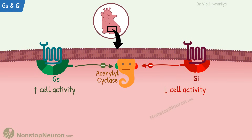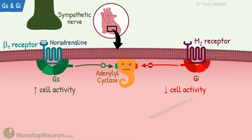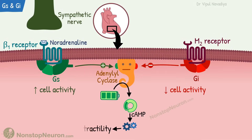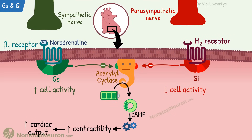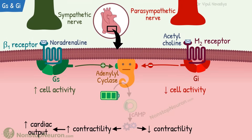For example, cardiac myocytes contain both beta-1 receptors, which are coupled with Gs protein, and M2 receptors, which are associated with Gi protein. Sympathetic nerve terminals release noradrenaline, which stimulates the beta-1 receptor and increases cAMP levels, leading to an increase in contractility and increased cardiac output under sympathetic stimulation. On the other hand, parasympathetic nerve endings release acetylcholine, which stimulates the M2 receptor and decreases cAMP levels, leading to a decrease in contractility under parasympathetic influence. The net effect on contractility depends on which system is predominantly active. This is a great example of how a second messenger system integrates signals from different extracellular messengers to control a single cellular function — in this case, adrenaline and acetylcholine both control contractility through the same second messenger pathway.